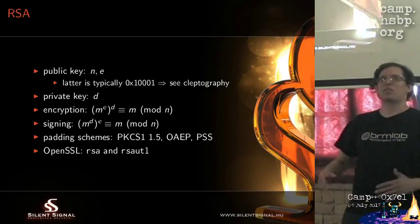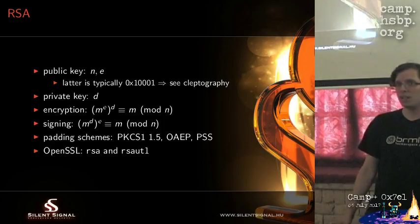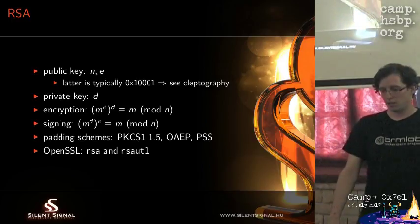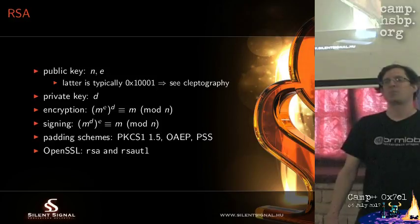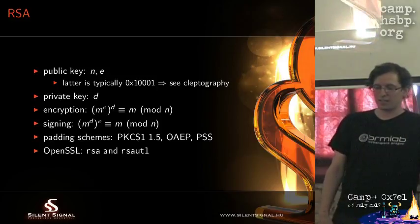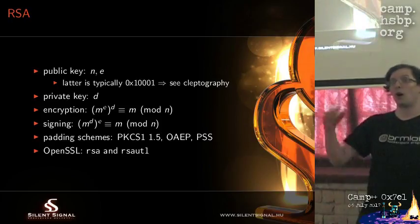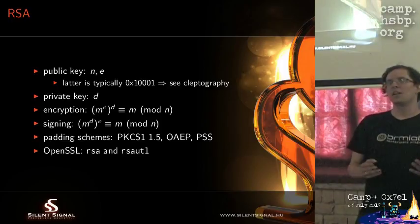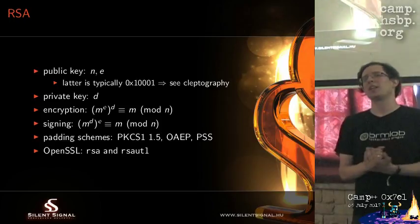In RSA — just recapping to get everyone to the same baseline — you have a public key which consists of two numbers. One is called n, typically called the modulus, and the other is e, the public exponent. This latter one is typically 0x10001 in hexadecimal because it's really good to calculate with and it makes kleptography really hard.